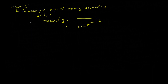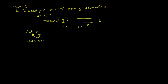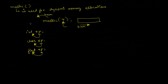Since malloc is returning the base address, we need some variable to store that base address. If we have an integer pointer p, it is only going to store the address of an integer variable. Similarly, a character pointer stores a character address, and a float pointer stores a float address. So if malloc returns an address and we want to store it in an integer pointer, we have to typecast that address to be of type integer.